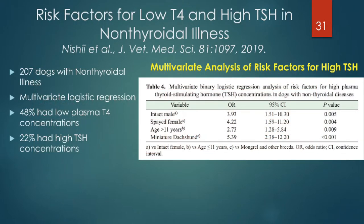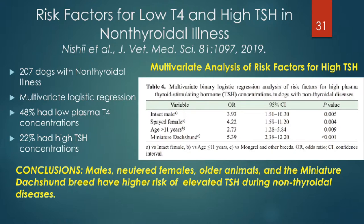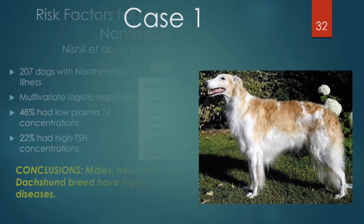We're going to focus on high TSH in non-thyroidal illness. About a quarter of the 207 dogs with non-thyroidal illness had elevated TSH, which would suggest hypothyroidism. Risk factors included male or spayed female, animals over 11 years old, and miniature dachshunds — each leading to increased odds ratios for elevated TSH. In summary, males, neutered females, older animals, and miniature dachshunds have a higher risk of elevated TSH during non-thyroidal disease. Let's pause here and talk about a case.